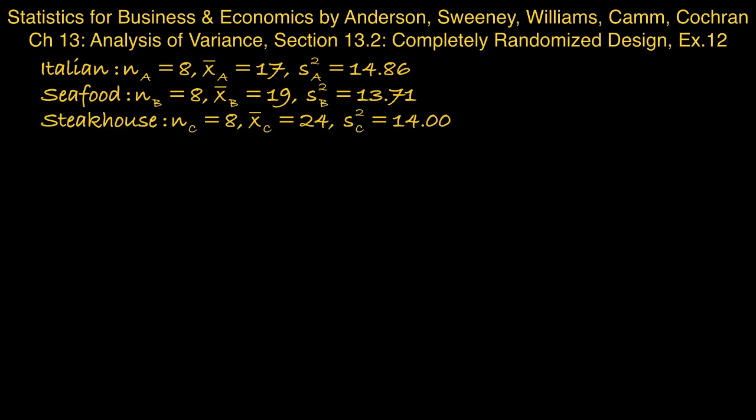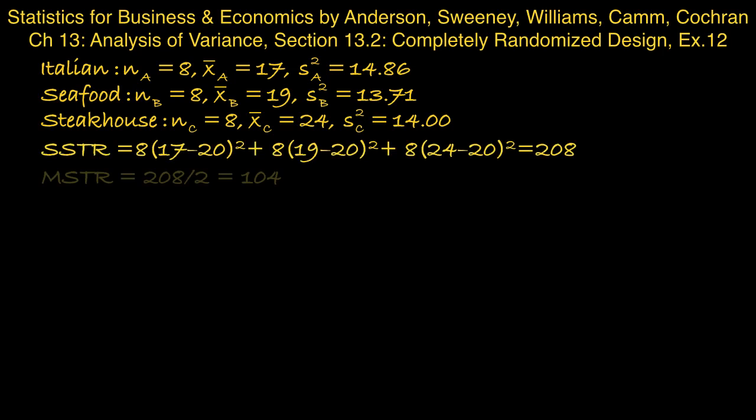The sum of squares due to treatment, we need to calculate first the overall sample mean, which comes to 20. And then using the formula provided in the textbook, we obtain a sum of squares due to treatment as 208. Dividing this by its degrees of freedom, 2, we obtain 104 as the mean square for treatment.